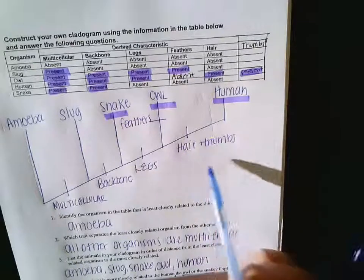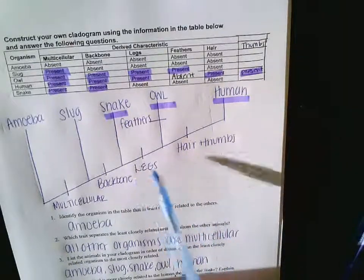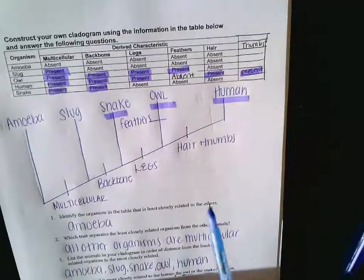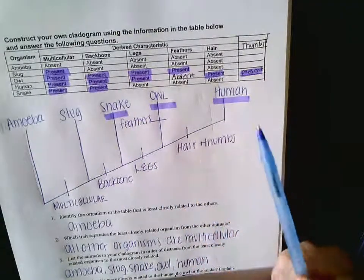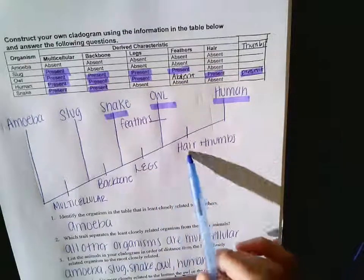One, two, right. Hair and thumbs I would put in a category, but if you wanted to say three you could say hair and thumbs are two separate things. How many things separate the human and the snake? Three. One, two, three.